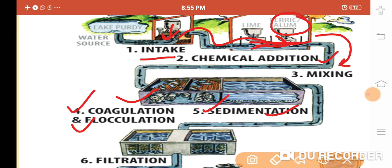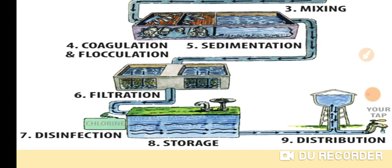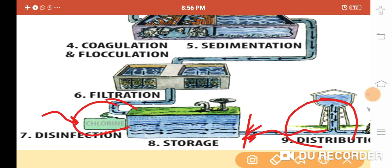Sedimentation and precipitation are similar terms — in both cases, the heavy particles settle down as impurity. After that, we pass the water through the filtration method. After filtration we get fresh water, but that water still contains harmful bacteria. So we use the chlorination process — a bacteria killer — after which the bacteria are killed and the fresh potable water is stored in another container.